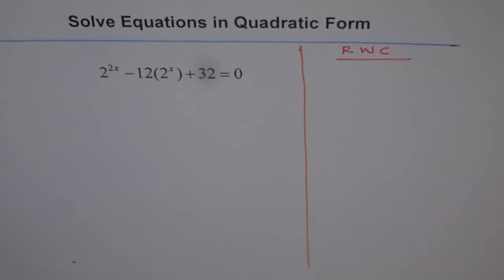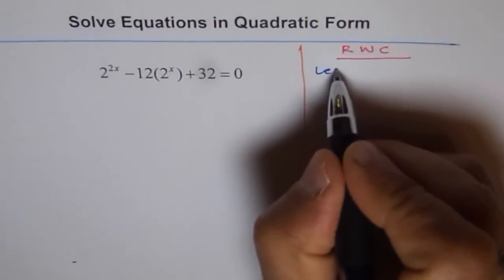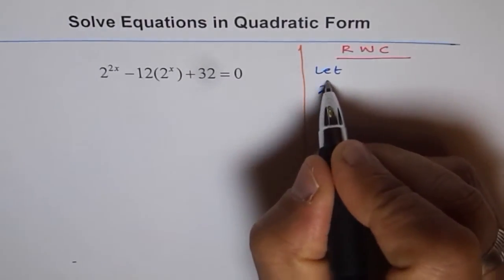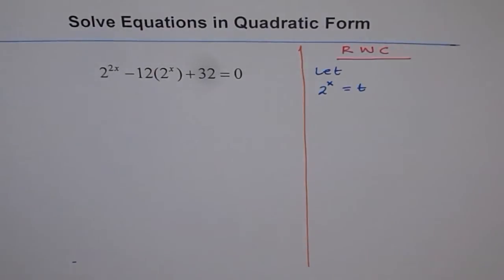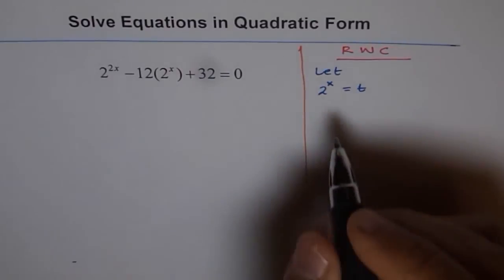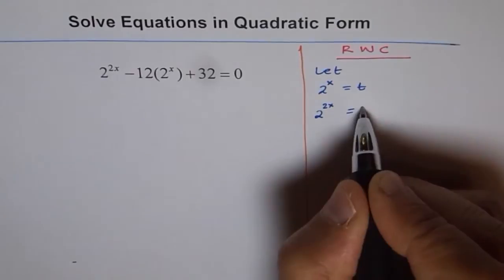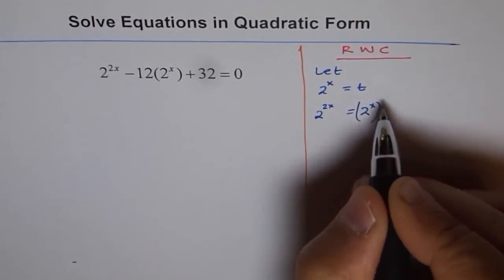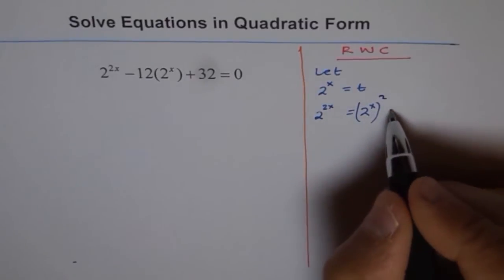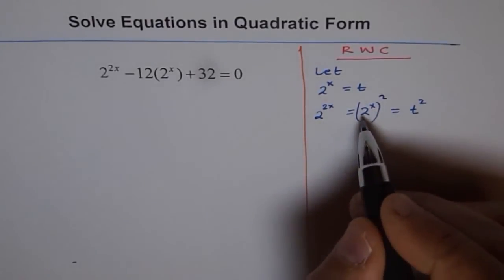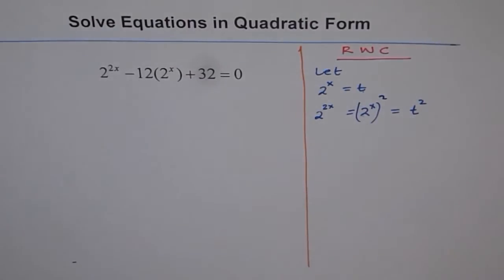Now in this column, what I will do is let's substitute something. Let 2 to the power of x equals t. Then what is 2 to the power of 2x? 2 to the power of 2x can be written as 2 to the power of x squared. When you multiply 2 with x, you get 2x. So this is as good as writing t squared because 2 to the power of x is t for us. So 2 to the power of 2x becomes t squared for us.